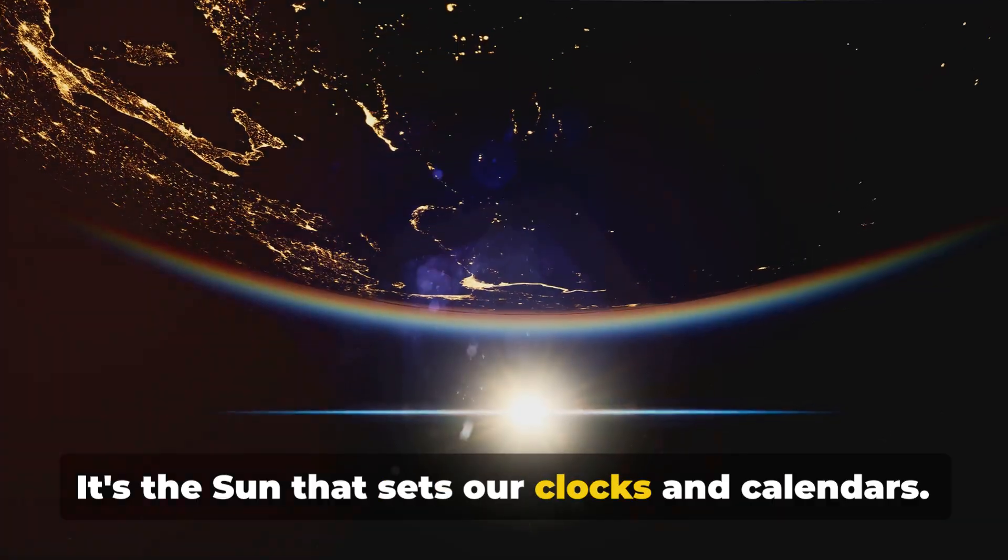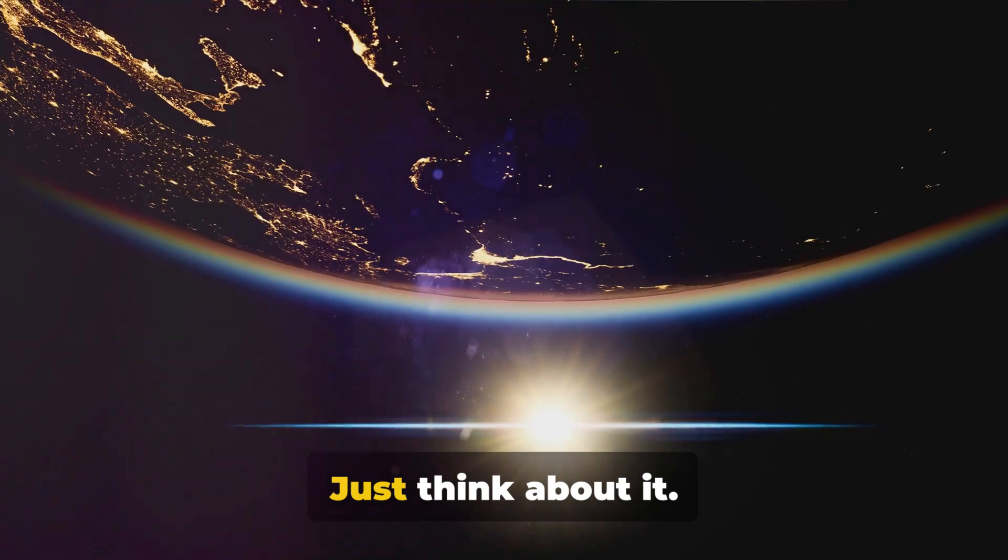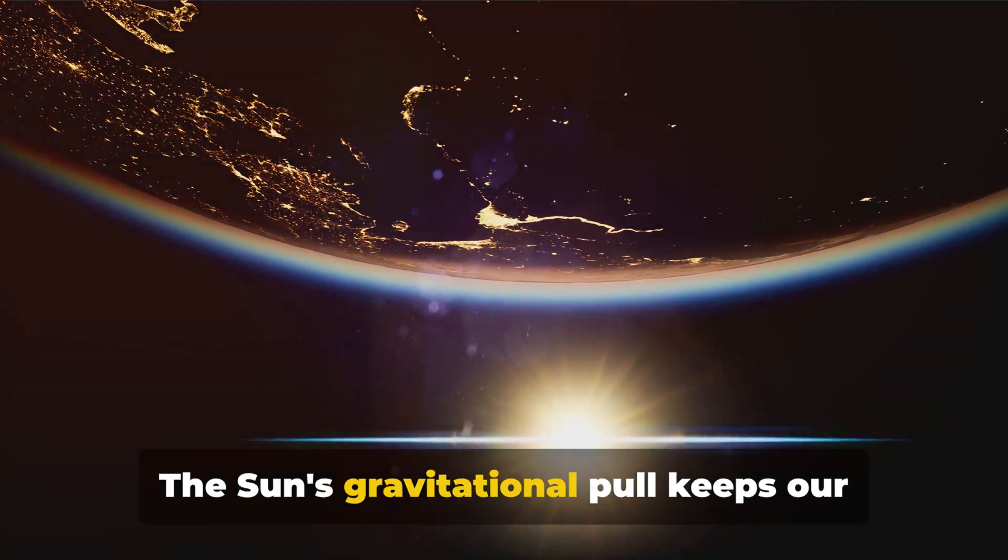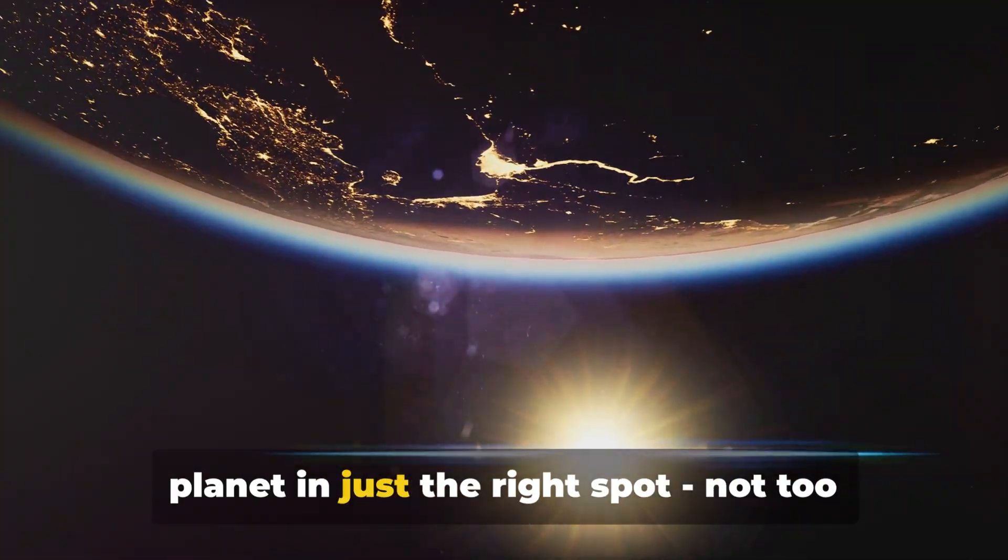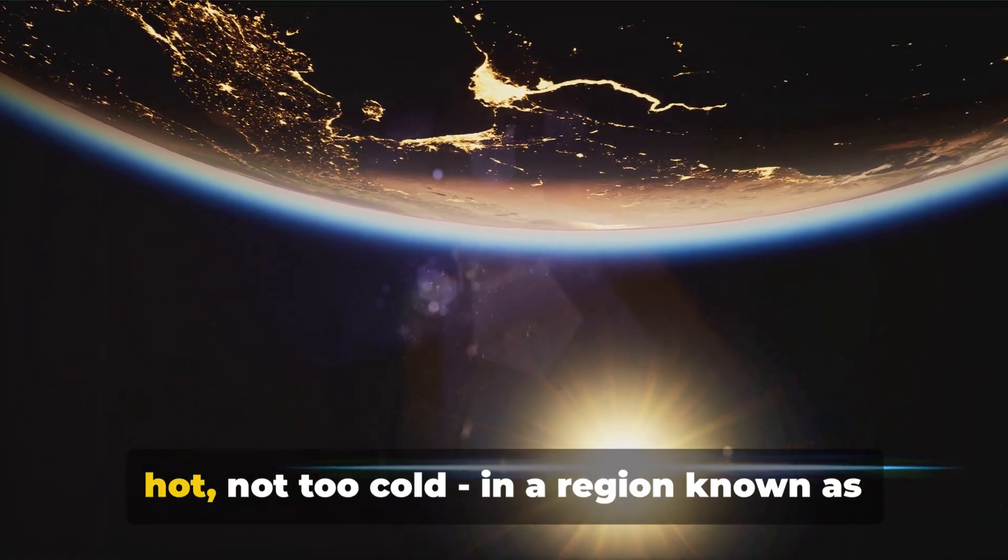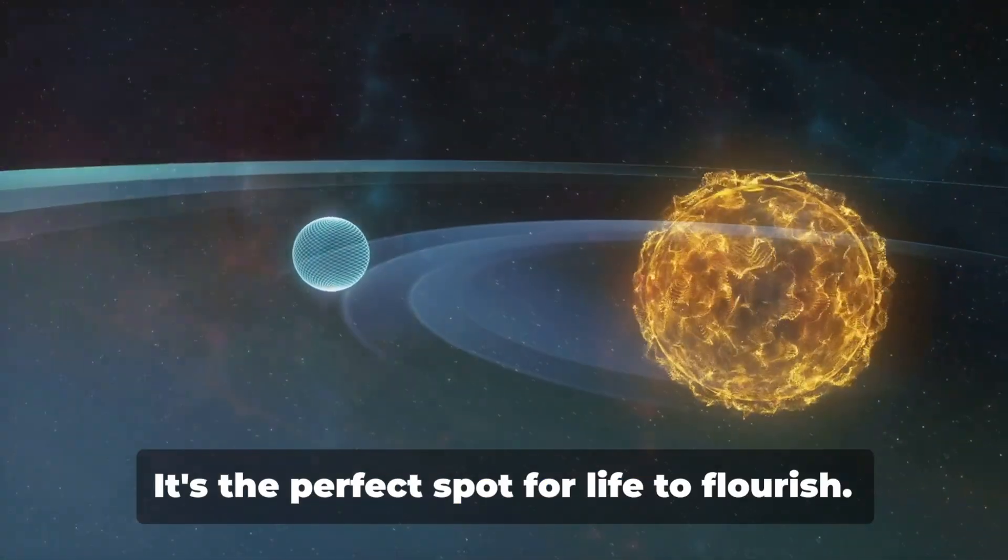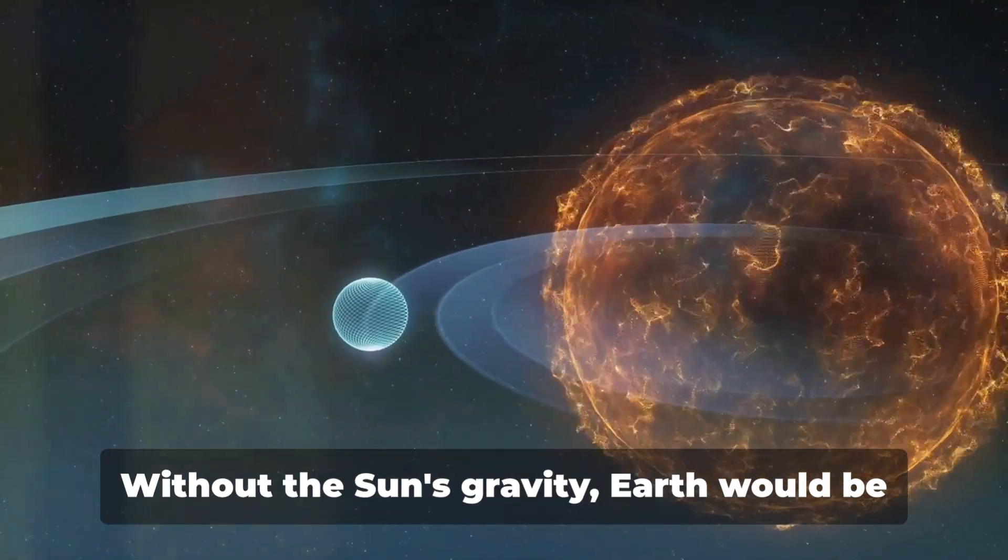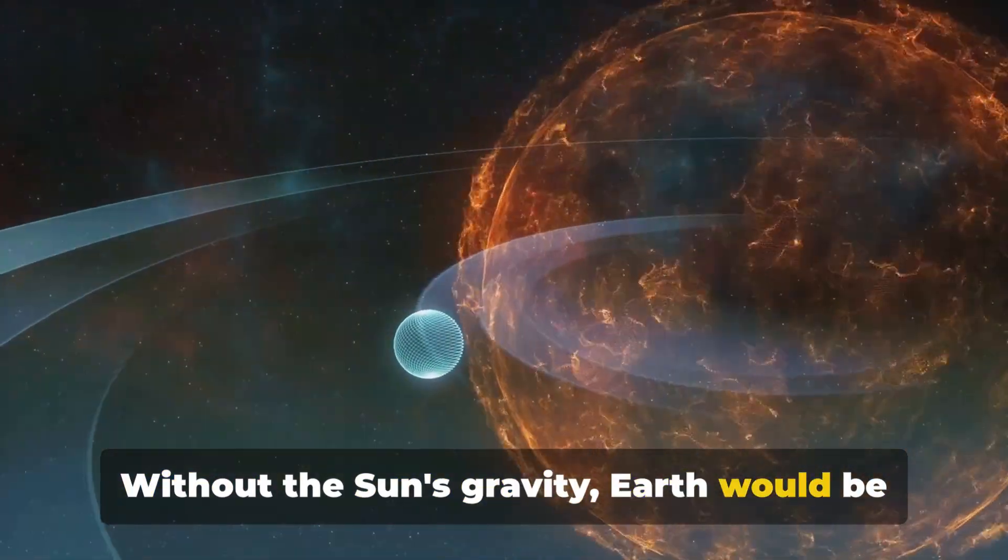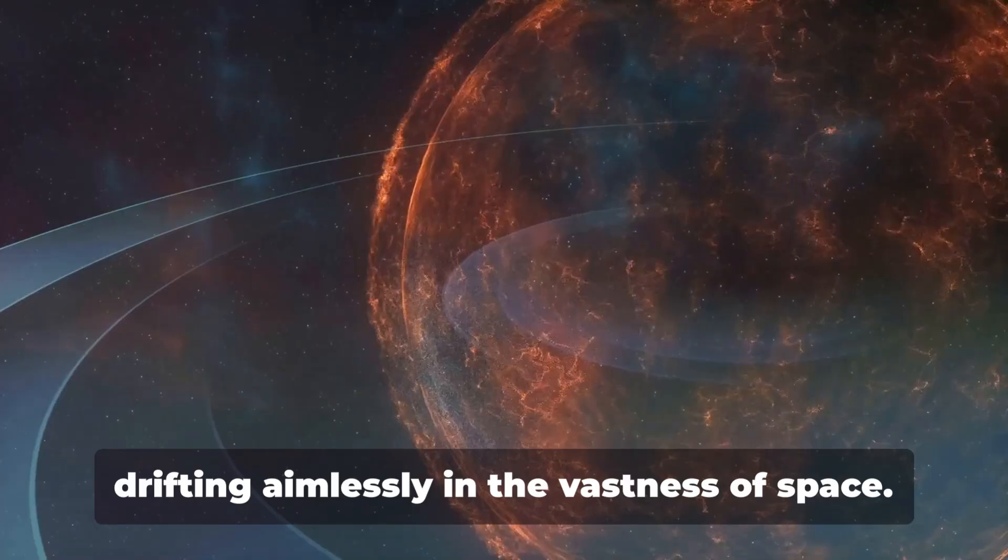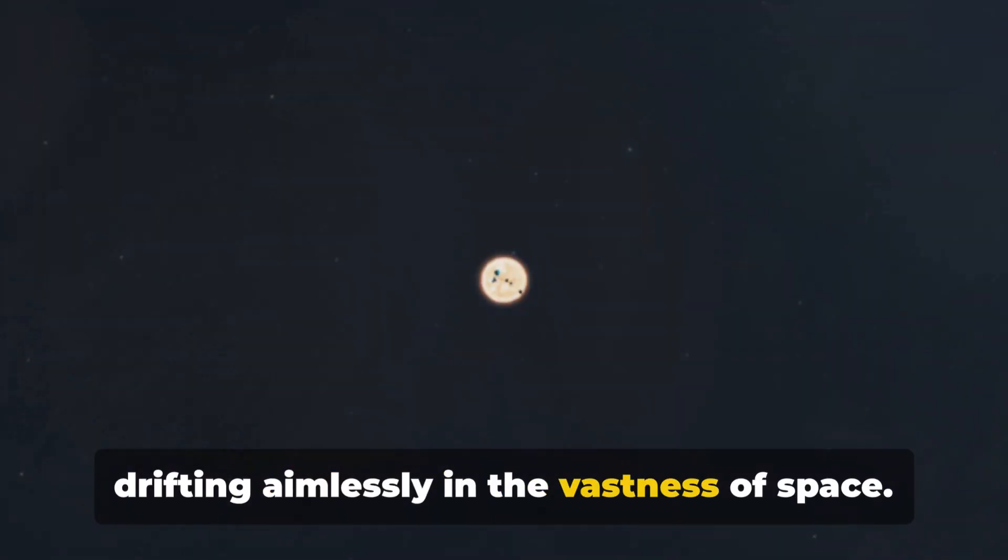It's the sun that sets our clocks and calendars. Just think about it. The sun's gravitational pull keeps our planet in just the right spot, not too hot, not too cold, in a region known as the Goldilocks zone. It's the perfect spot for life to flourish. Without the sun's gravity, Earth would be like a car without a steering wheel, drifting aimlessly in the vastness of space.